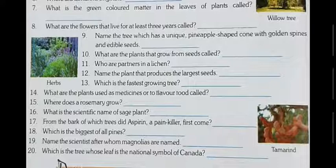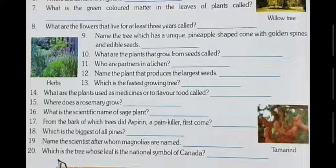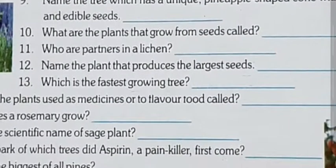Question eleven: who are the partners in a lichen? Fungi and algae are the partners in lichen. Question twelve: name the plant which produces the largest seeds. The name of the plant is Coco de Mer — C-O-C-O D-E-M-E-R.